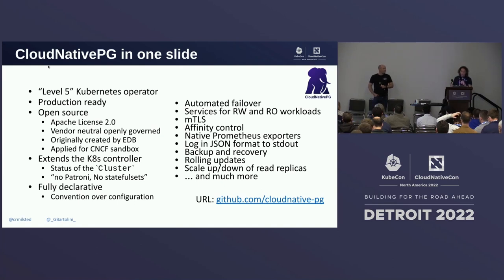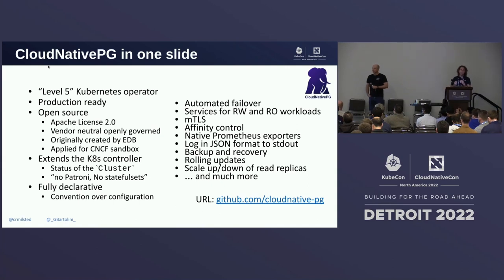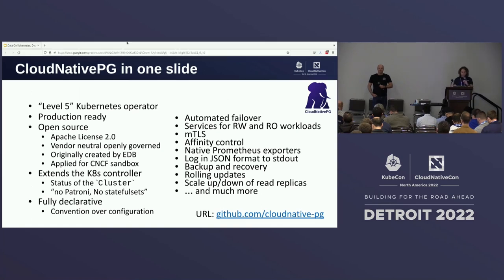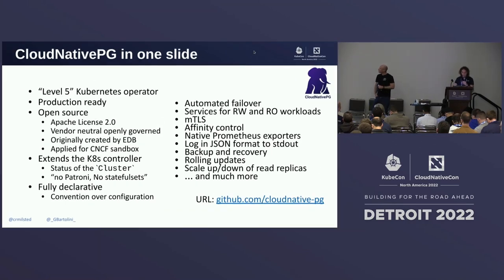Cloud Native PG is fully declarative and relies on Kubernetes resources to facilitate integration with applications — such as services, mutual TLS via secrets, and affinity control. Out of the box, it provides observability through endpoints for the native Prometheus exporters, as well as direct JSON logging to standard output. Other important features include continuous backup and point-in-time recovery, rolling updates, scale-up, scale-down, and much more.